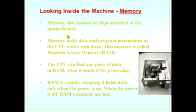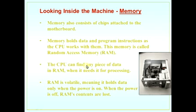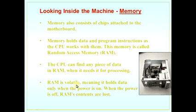Memory also consists of chips attached to the motherboard. Memory holds data and program instructions that the CPU works with. This memory is called random access memory — RAM. The CPU can find any piece of data in RAM when needed for processing. RAM is volatile, meaning it holds data only when the power is on. When the power is off, RAM contents are lost.